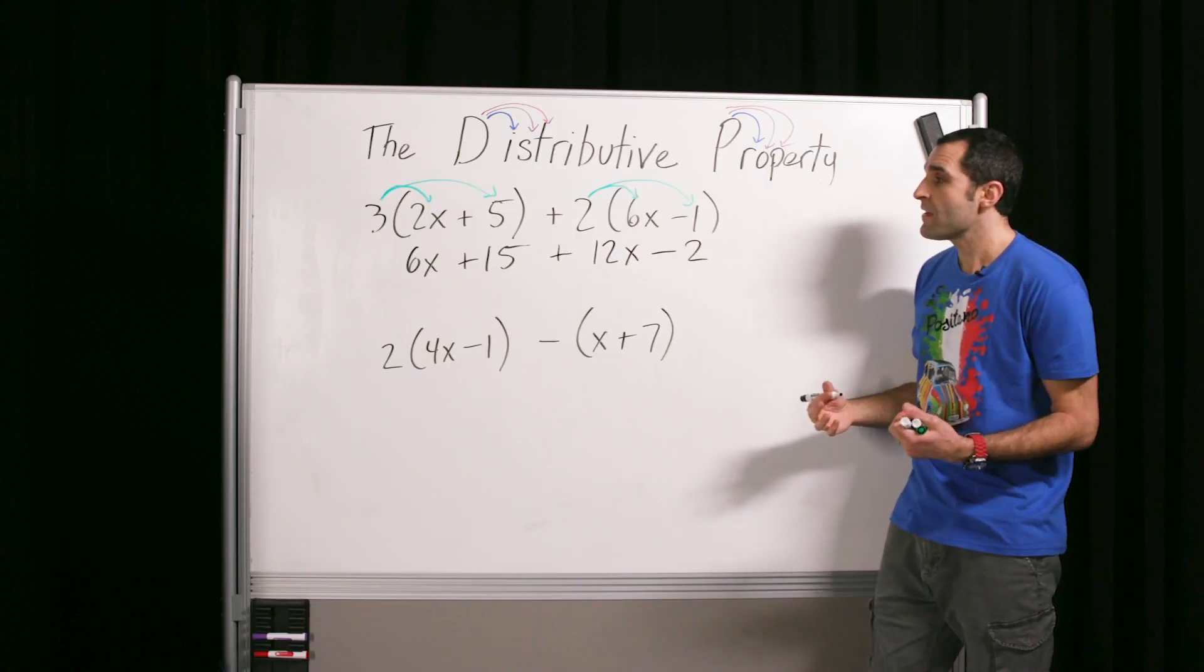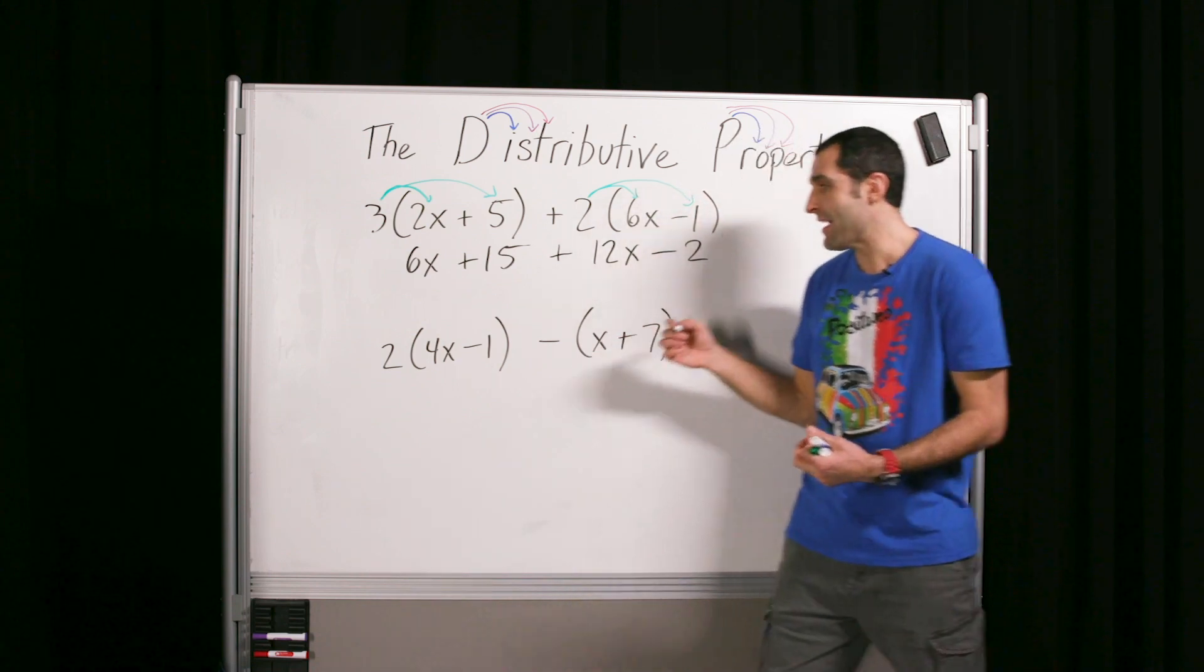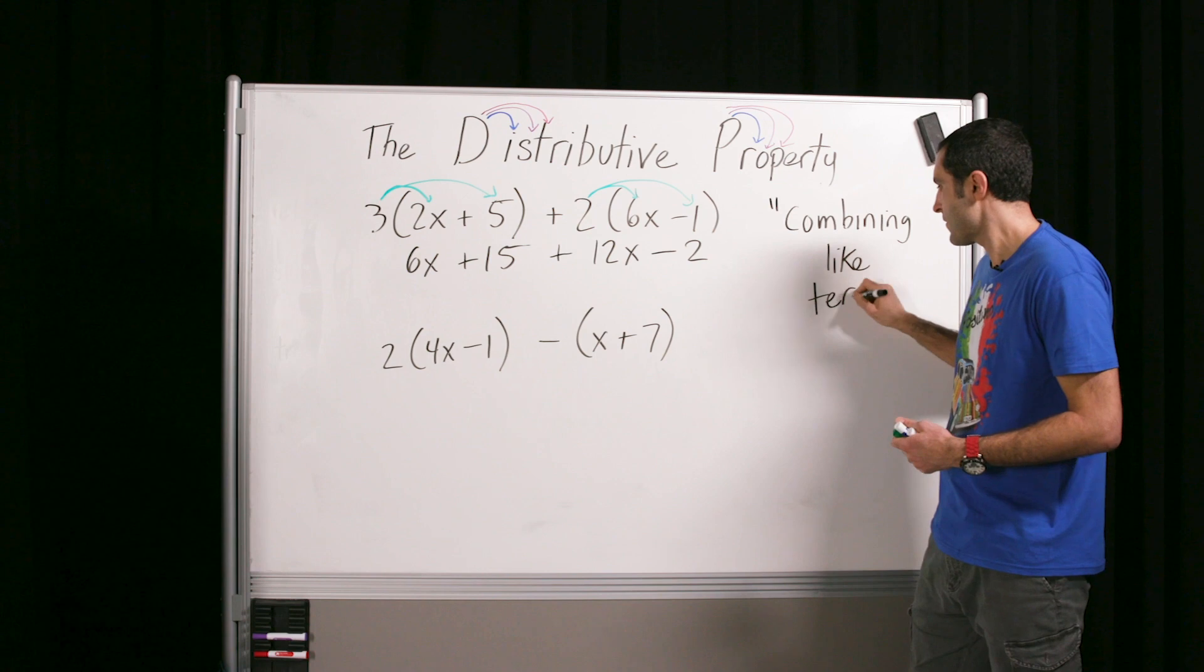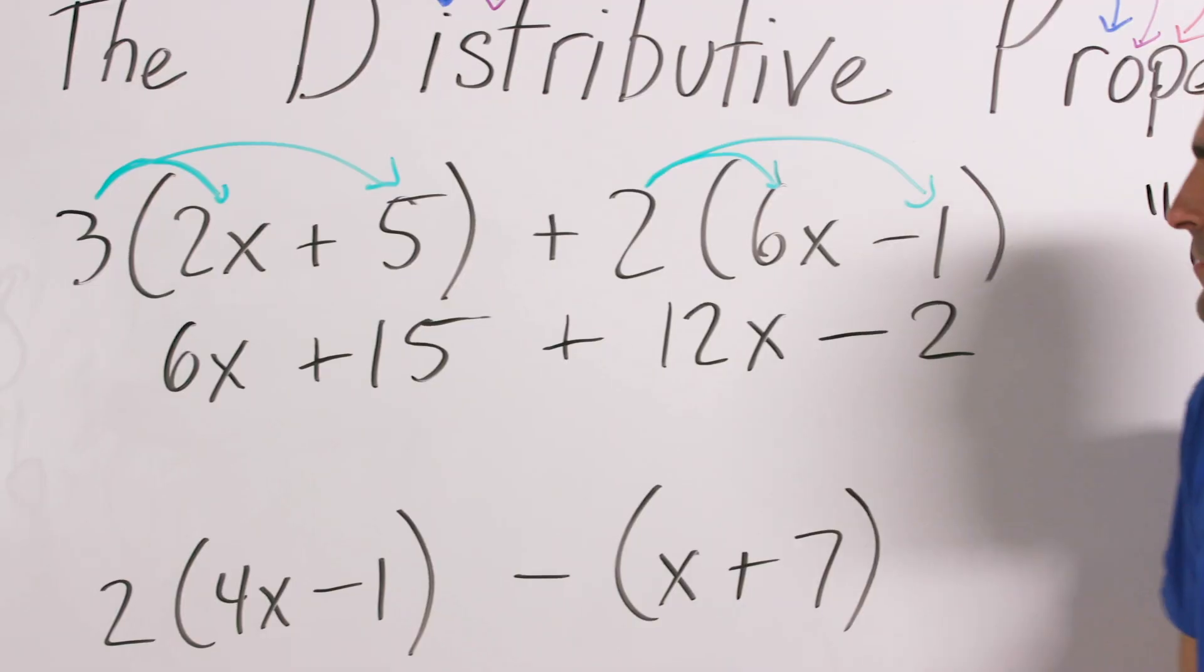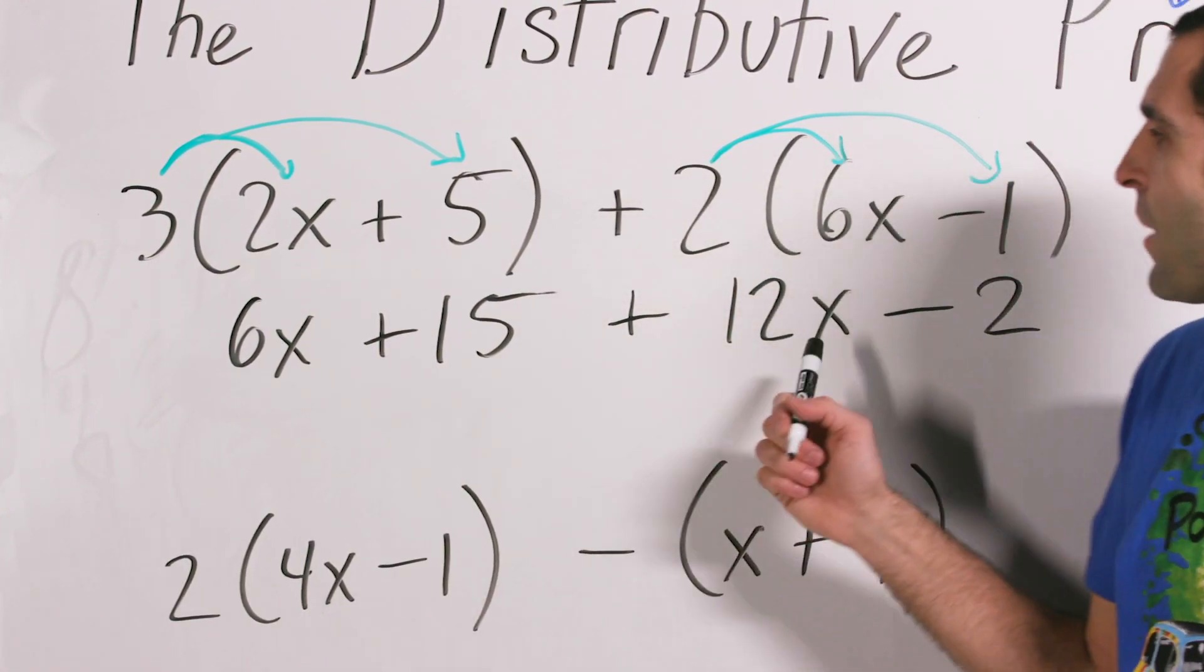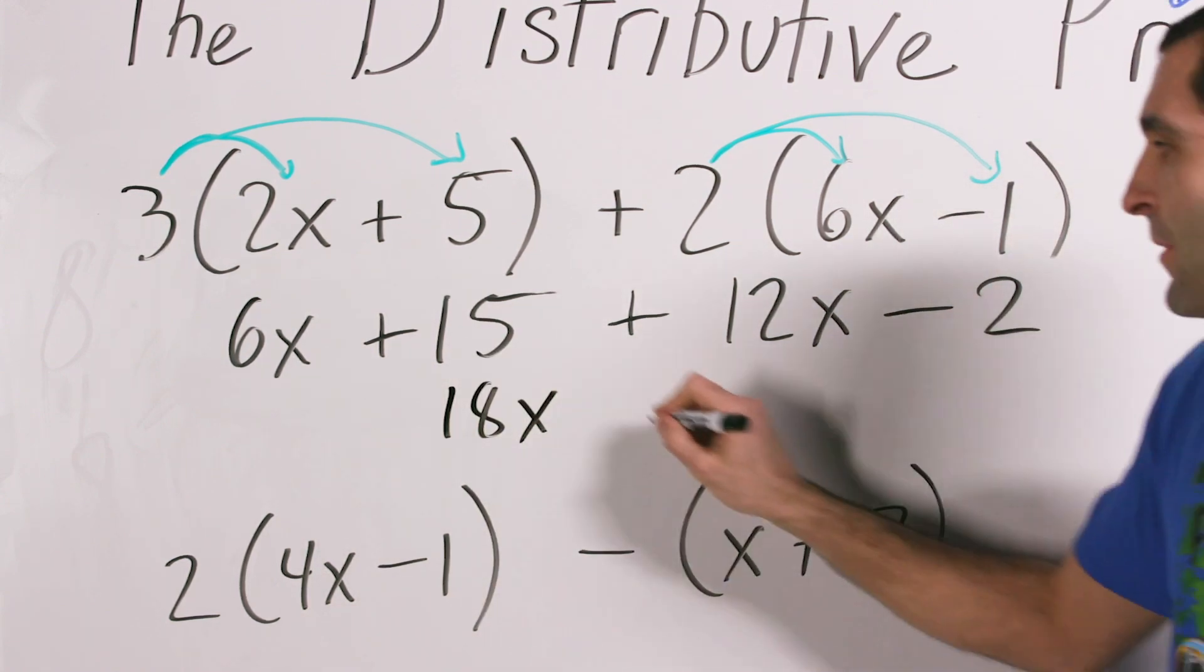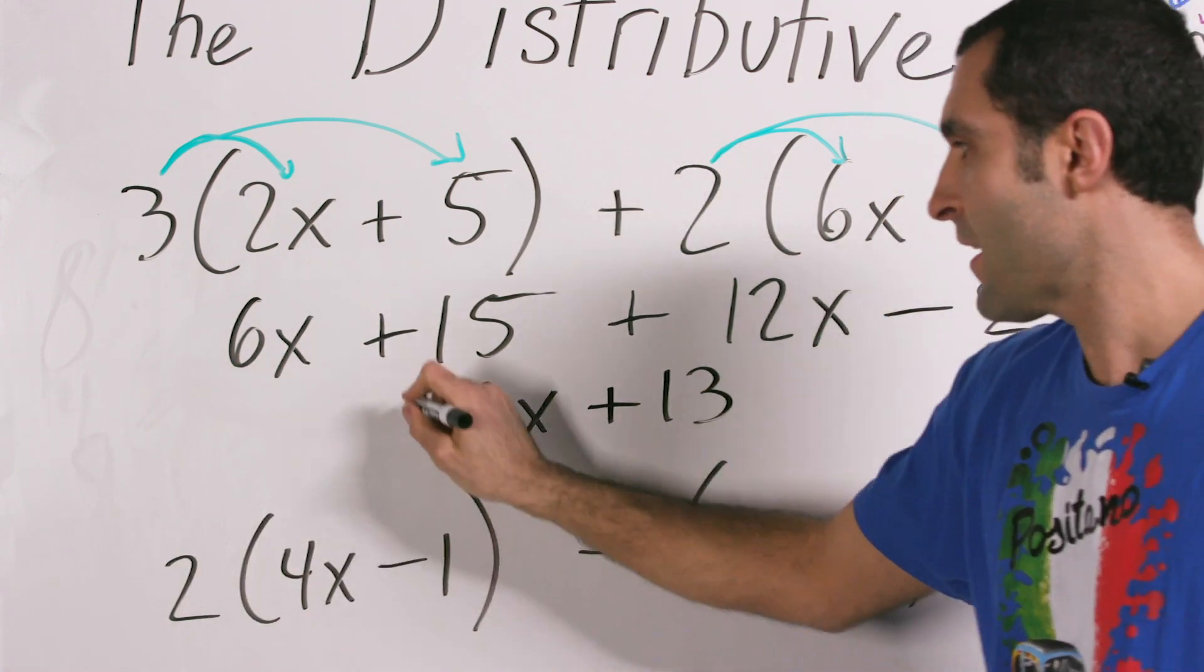And now we need to group, right? Or we need to combine. This act of combining different terms that are alike, that can be grouped, that can be combined, has a specific name. That act is called, maybe you've heard of it, combining like terms. So we see which of these four terms are alike in that matter. So I see that 6x and 12x can be added. Sort of like if I had 6 x-ray machines and 12 x-ray machines and I added them, I would have 18 x-ray machines. And if I had $15 and I subtracted $2, I'd be left with positive $13. So that would be the simplification of these two distributions. So that's one.